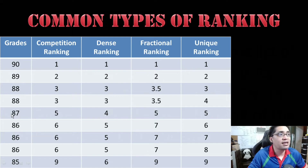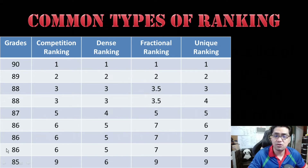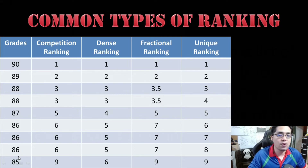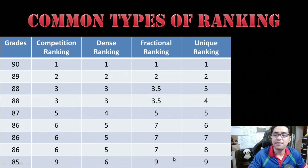87 is not tied, so it has a rank of 5 — because there are 4 values above it. For 86, you have 3 tied values. This is supposed to be sixth place, this is supposed to be seventh place, and this is supposed to be eighth place. So, 6 plus 7 plus 8 is 21, and because there are three values tied, 21 divided by 3 is equal to 7. That is why all of the 86 values have a fractional rank of 7. And lastly, 85 has no tie, so it is ninth place. That is how fractional ranking works.